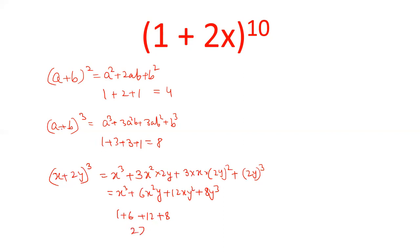That gives us 27. Now, why is it that the sum of coefficients of (a + b)³ is 8, and (x + 2y)³ is 27? The reason is that here we have 2y. That is, this 2 will also impact the coefficients.